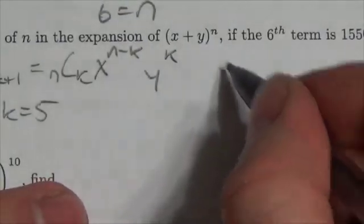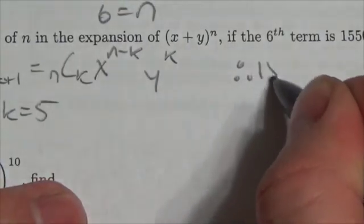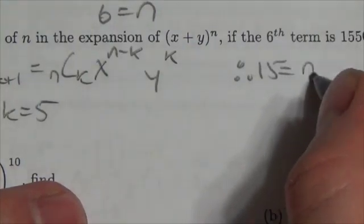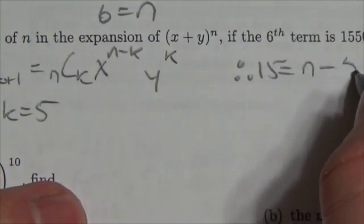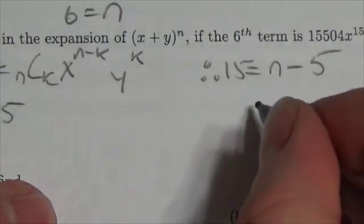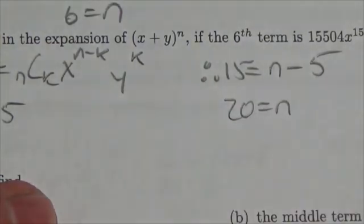That 15, therefore 15 is going to equal n minus k. In this case k is 5. So bring that over and we get that n is equal to 20.